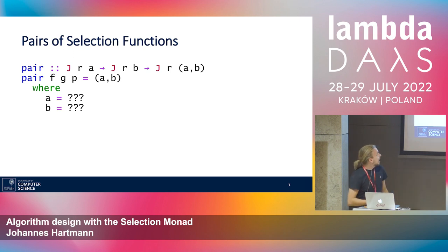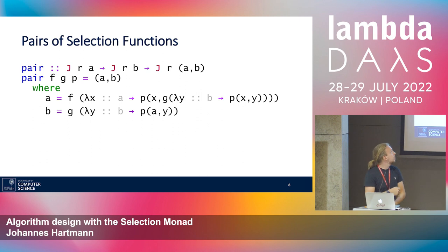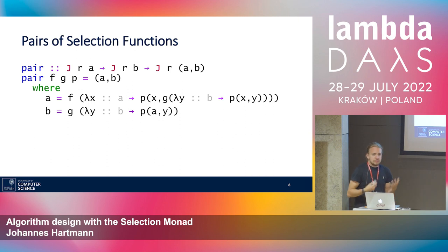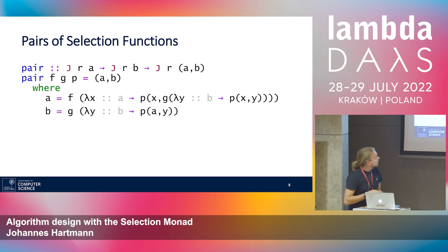For a pair we need an A and a B. Only F and G can give us those — F produces an A if we give it some judgment, and G produces a B. To get an A we need to apply F to something. Reminding ourselves that JRA is something of type A to R, given the function from A to R it returns an A. So we need to build that function from A to R, using a lambda where X is of type A.